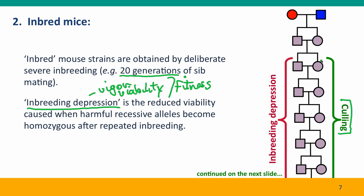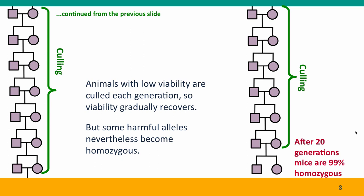Of course, it's not always possible to completely cull all of the less fit individuals, so that over the many generations the breeding program takes, it's inevitable that some harmful alleles are going to become homozygous — they'll be fixed in the population, the only allele present. After 20 generations of sib-mating, the mice are 99% homozygous, which is enough to make them very suitable for biomedical research.